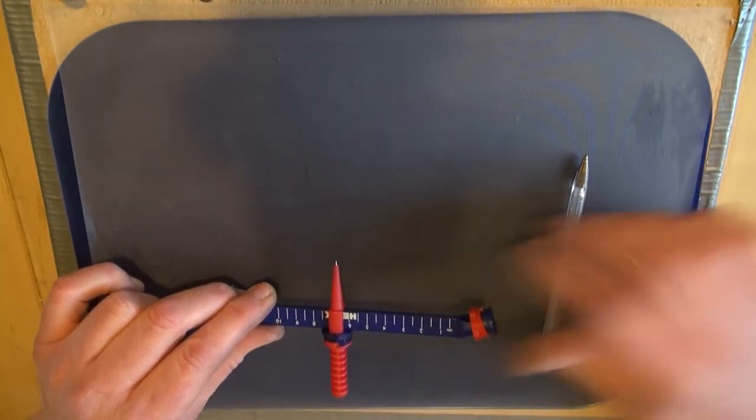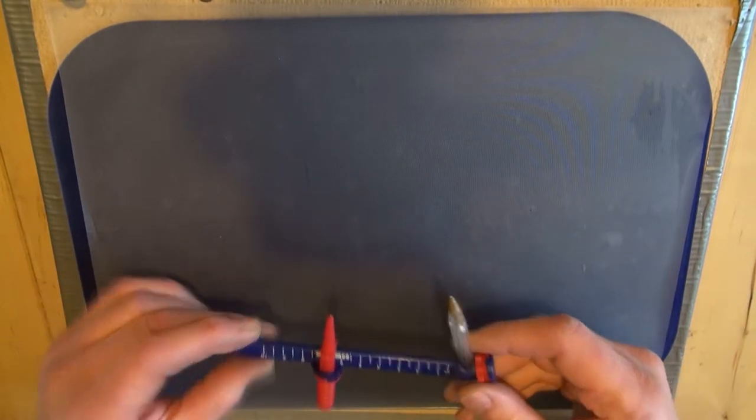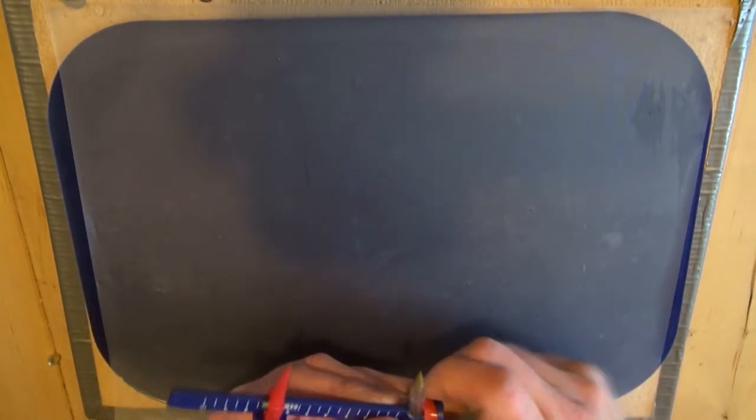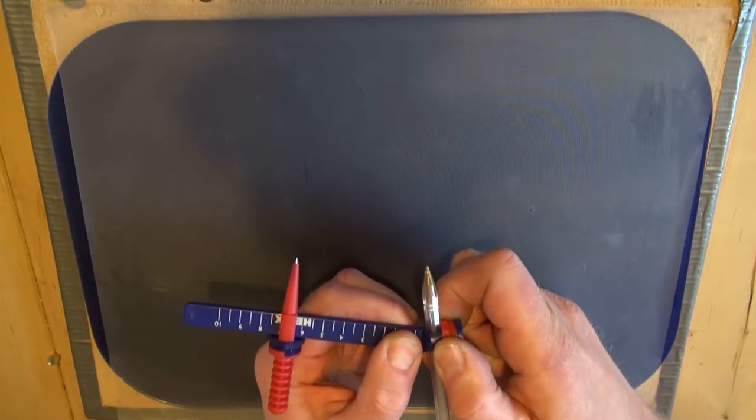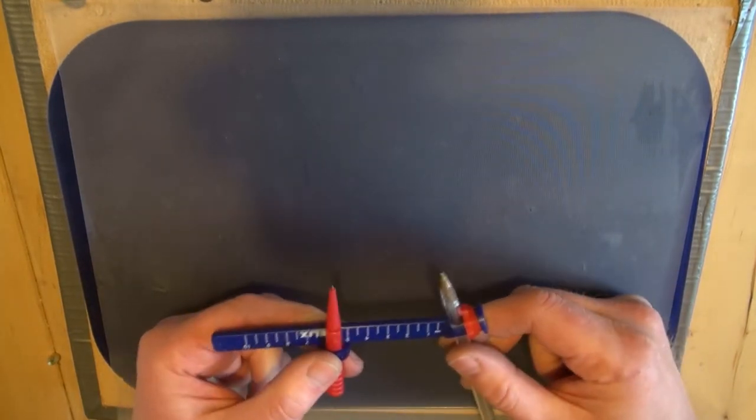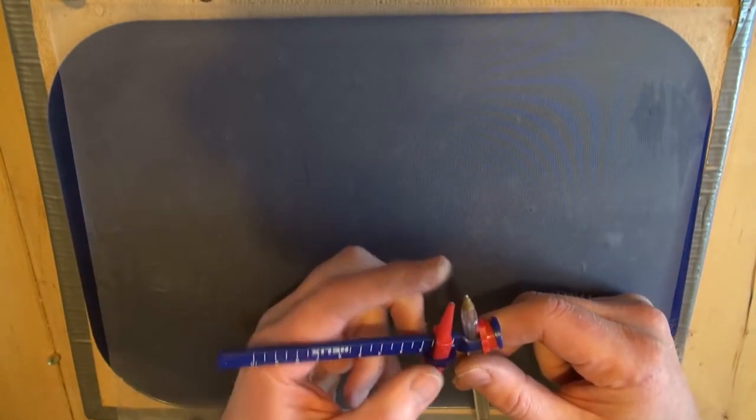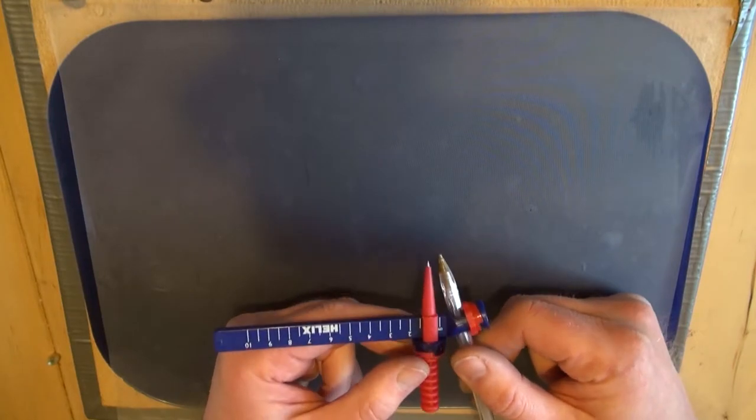You've got two thumb wheels on there. The first one just secures the pen. Do it up nice and tight so it can't move. And the second one secures the pointy bit there. Make sure the nib and the pointy bit are about the same level like that.